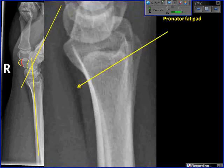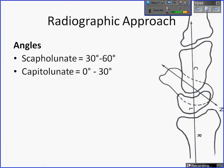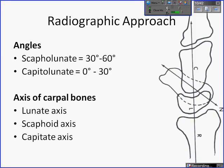On the lateral radiograph, two angles are of utmost importance: the scapholunate angle, which should be between 30 and 60 degrees, and the capitolunate angle, which should be between 0 and 30 degrees. To draw these angles, you need to properly draw the axes. The lunate axis is drawn by connecting the distal poles of the lunate and then drawing a perpendicular line. The scaphoid axis runs along the volar aspect of both the distal and proximal poles. For the capitate, you run a line straight through its body.